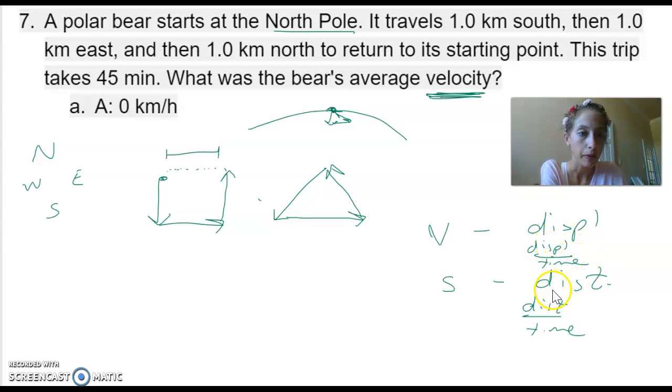So this is one of those vocab annoying ones. I'm so sorry. So the velocity is displacement over time. So if we end up back where we started, that means our displacement is zero. Which means the velocity is zero. The end.